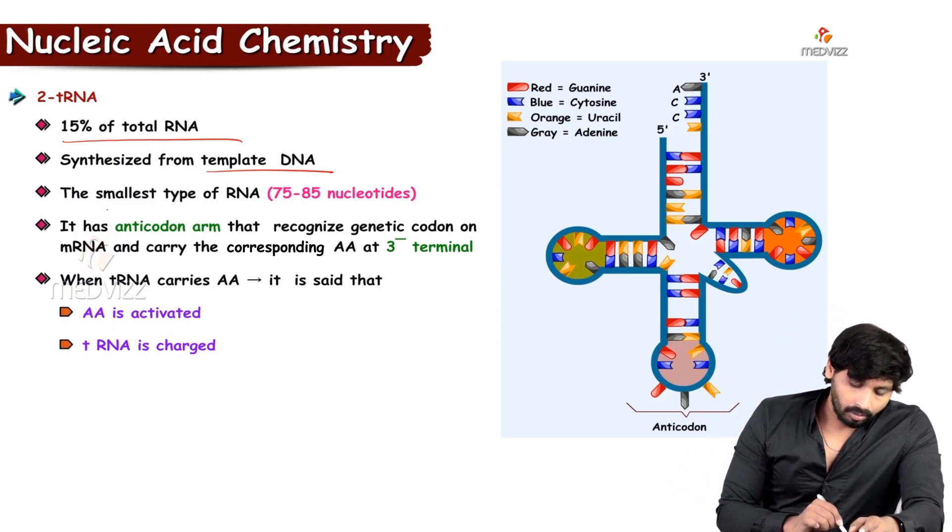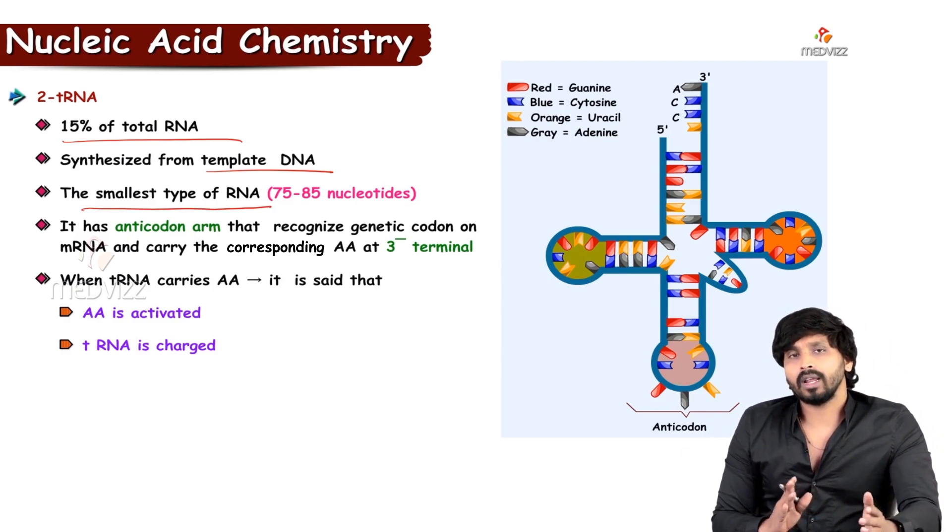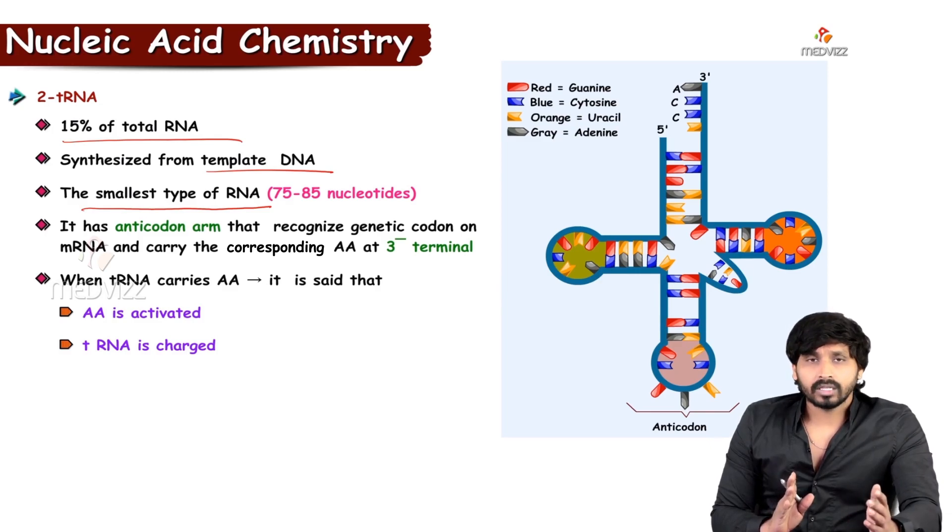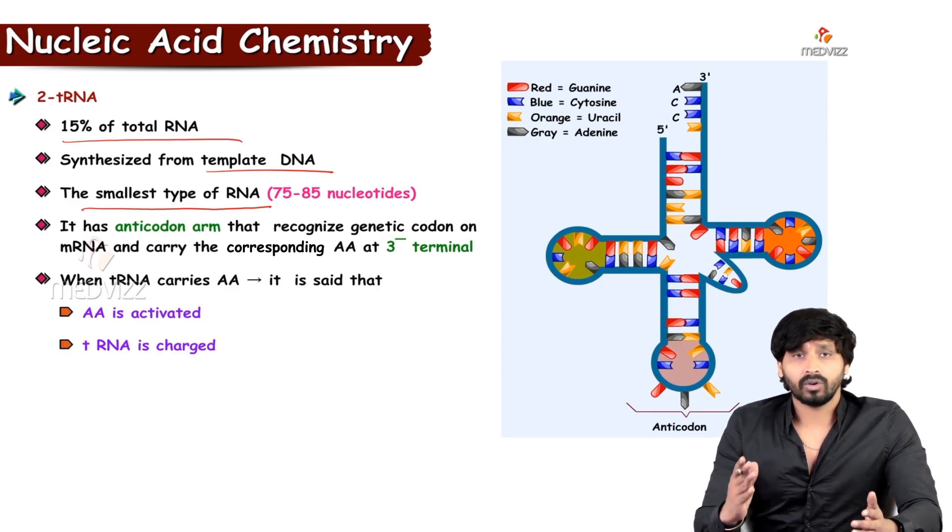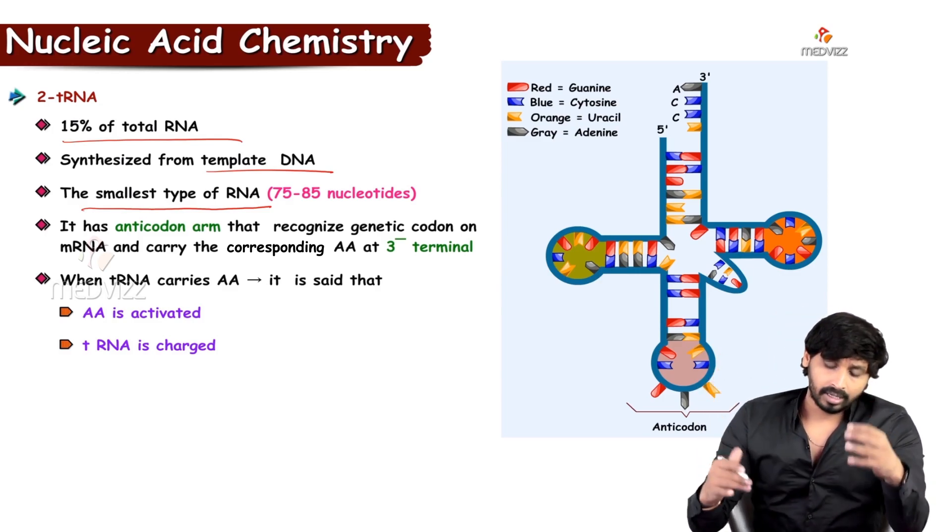It is the smallest type of RNA compared with mRNA and rRNA. tRNA is made up of 75 to 85 nucleotides, and it is made up of different parts.